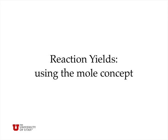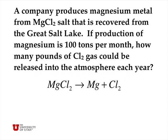The mole concept is really important for calculating reaction yields. We'll start with an example problem where a company produces magnesium metal from magnesium chloride salt recovered from the Great Salt Lake. If the production of magnesium is 100 tons per month, how many pounds of chlorine gas could be released into the atmosphere each year? We start by writing the balanced chemical reaction of magnesium chloride being used to produce magnesium metal and chlorine gas.